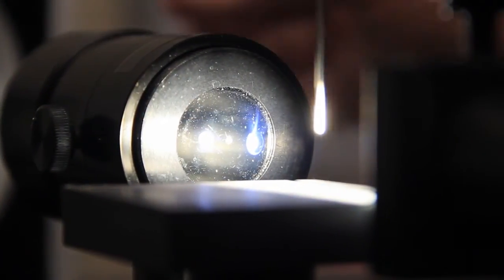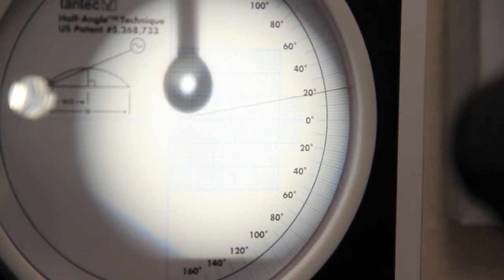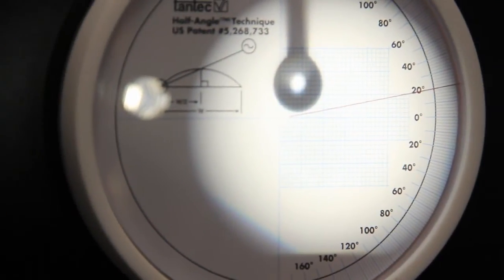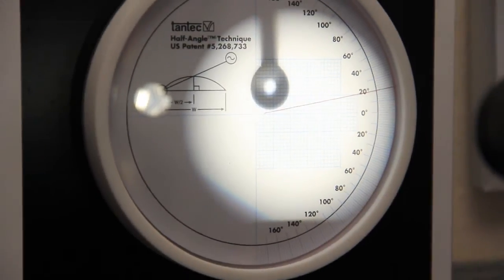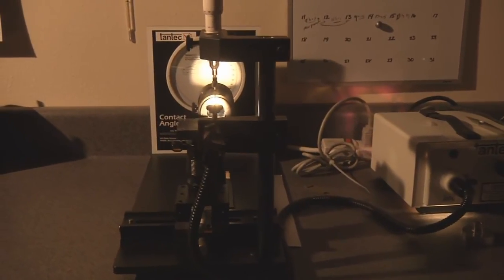We take a contact angle of that material by adding a small droplet of water, measuring that contact angle before the plasma, and then measuring it again after the plasma.